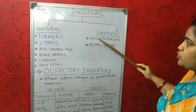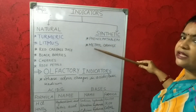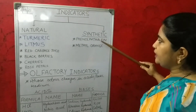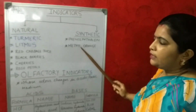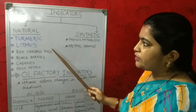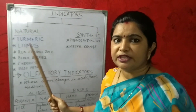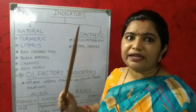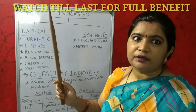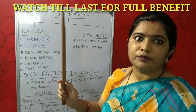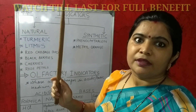However, these two are synthetic indicators: phenolphthalein and methyl orange. The color which they show in acidic or basic medium you can see on the video clip.